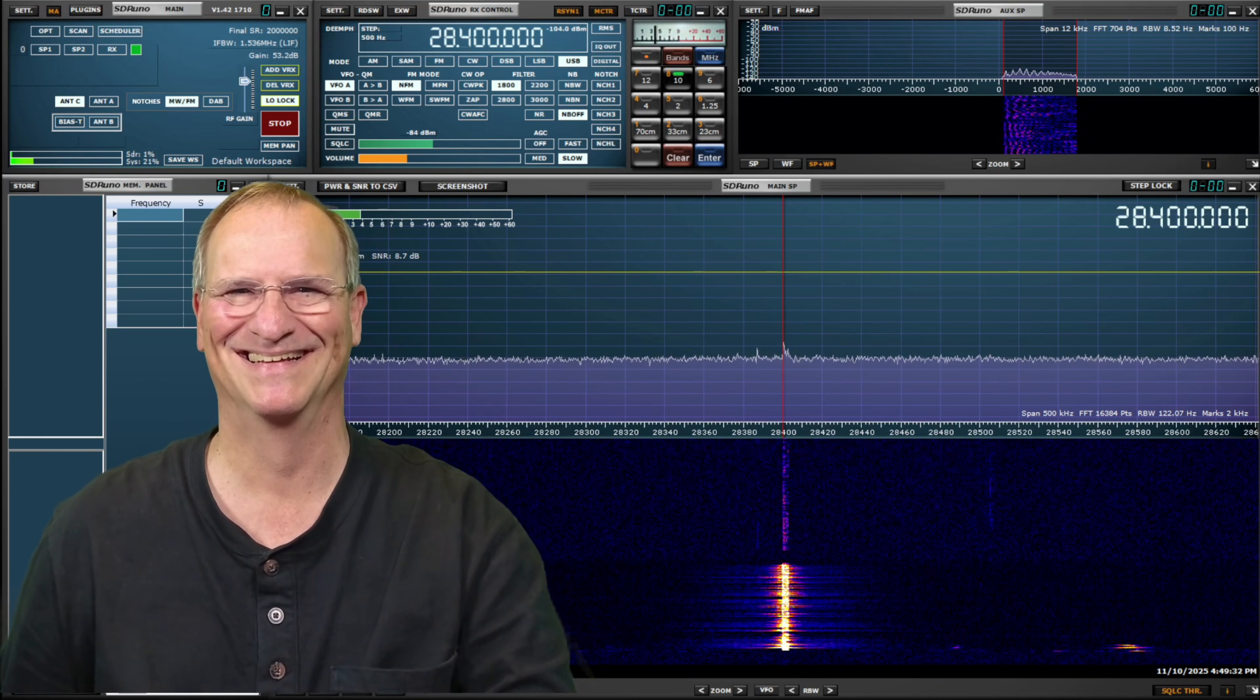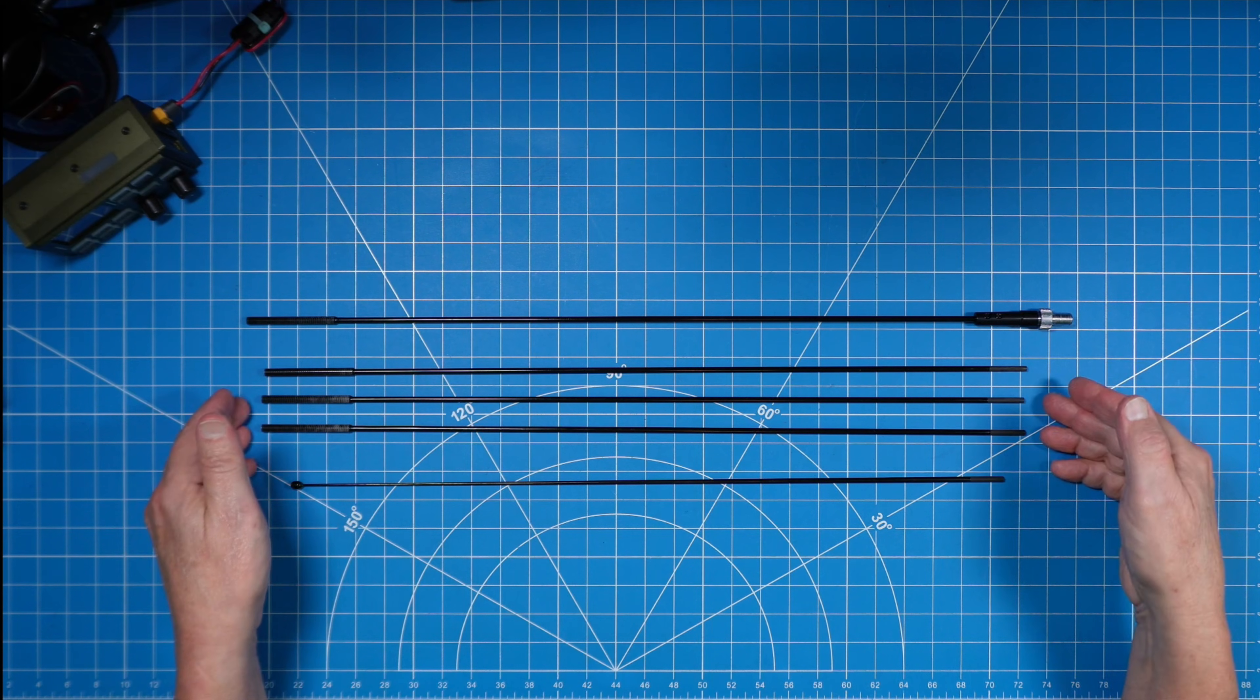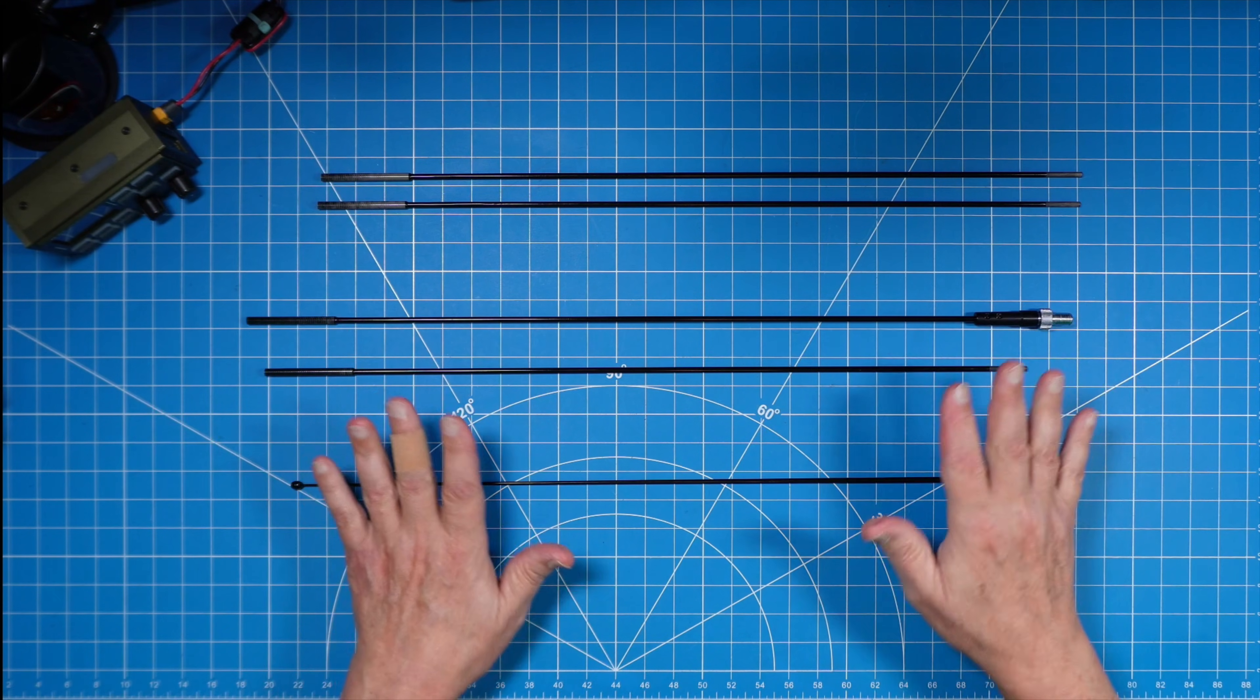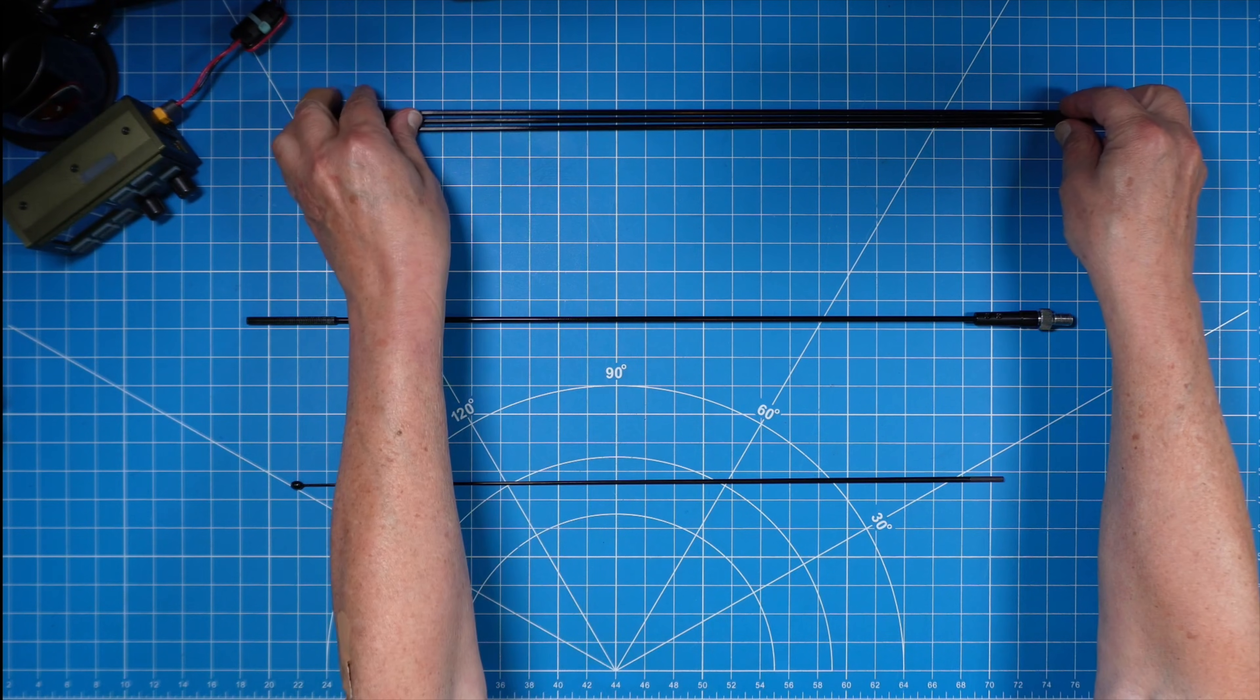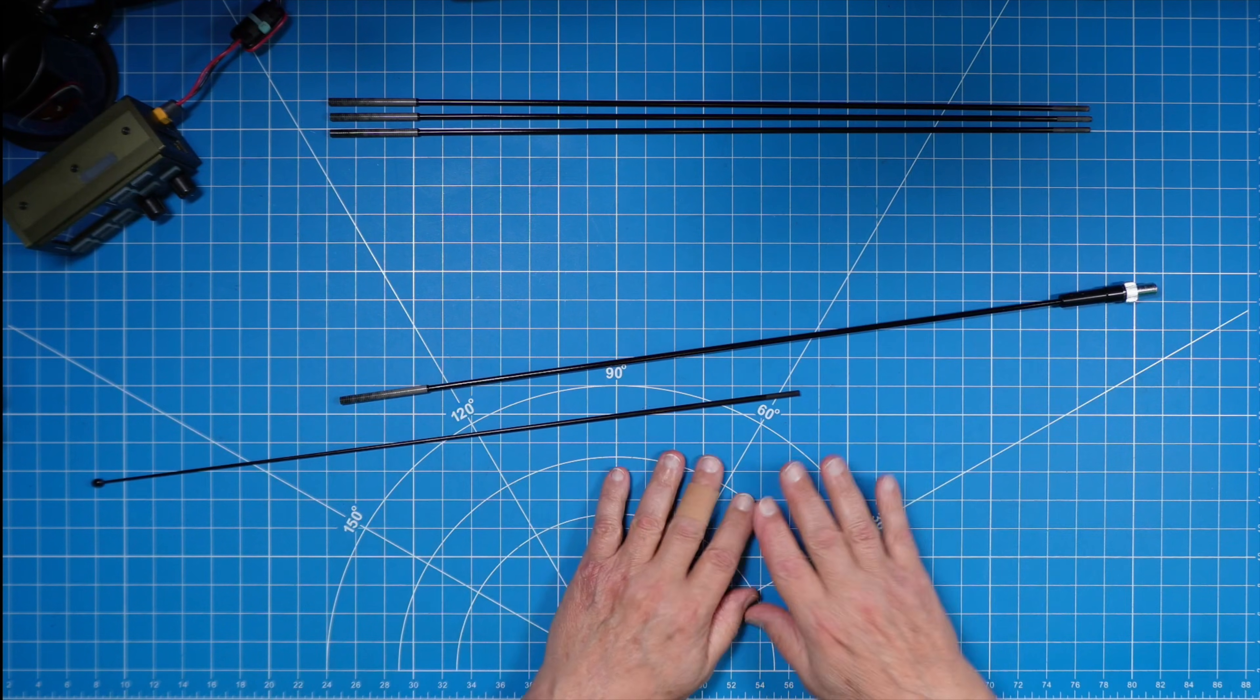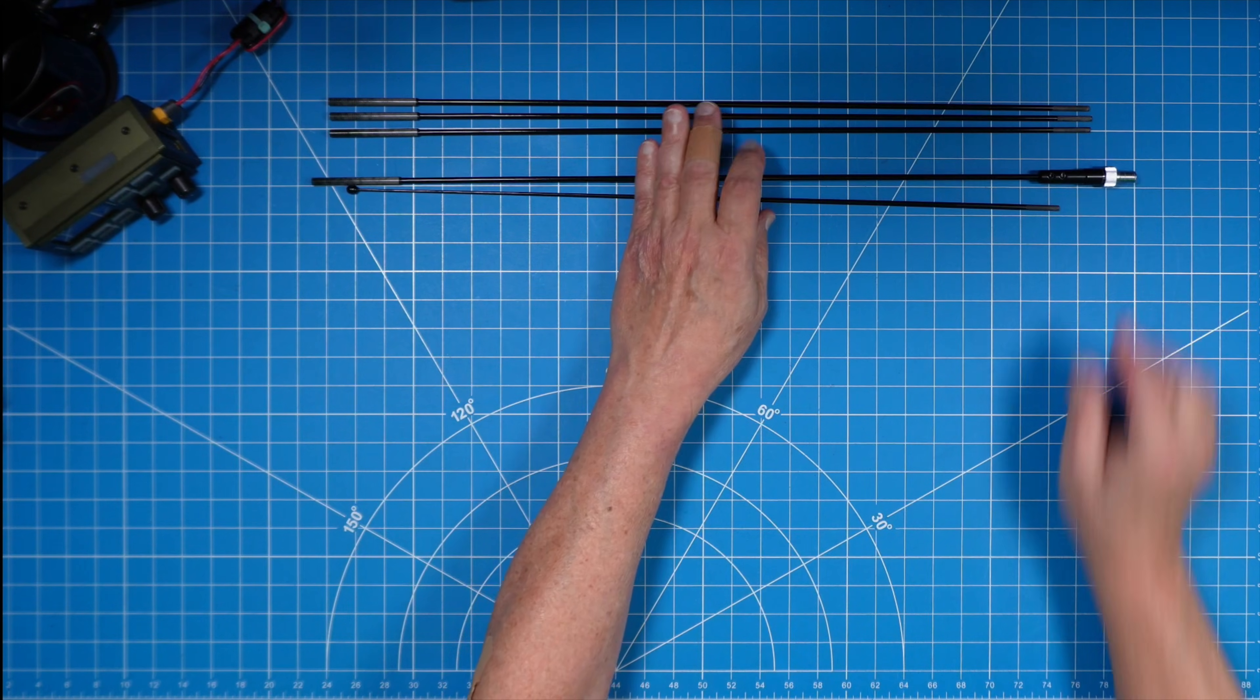You choose the number of elements and that determines the band. With all five elements, 10 meters. Take away two of the three same-size elements, six meters. Find yourself in a space-constrained area at a Parks on the Air and you get underneath a pavilion - two elements and you're easily on the underside of a roof on a picnic table.